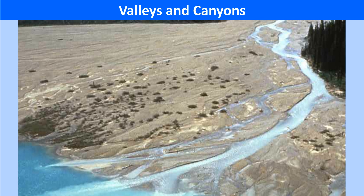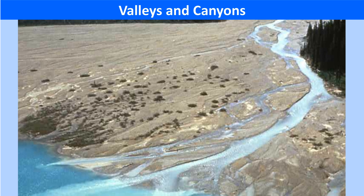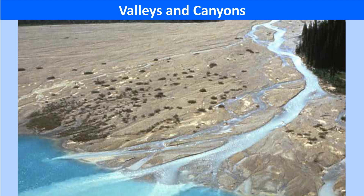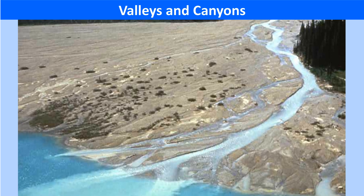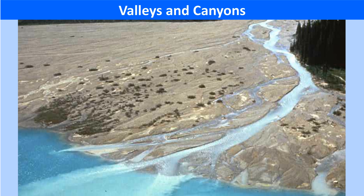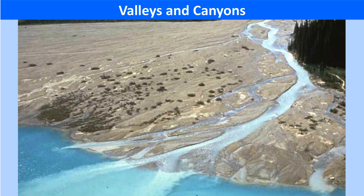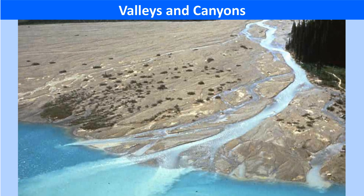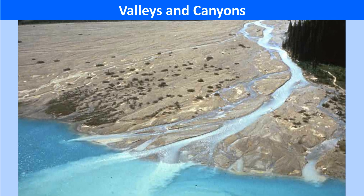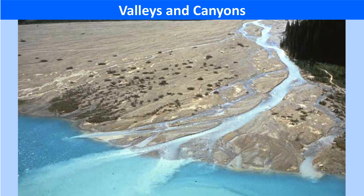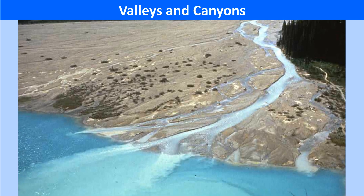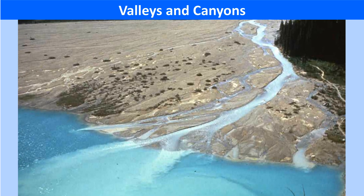The delta region is extremely fertile and supports the settlement of a huge population. The water of the rivers flows over the area, forming numerous small streams known as distributaries. The Ganga-Brahmaputra river system forms the world's largest delta. The Nile, Amazon and Mississippi rivers are also noted for the formation of deltas.